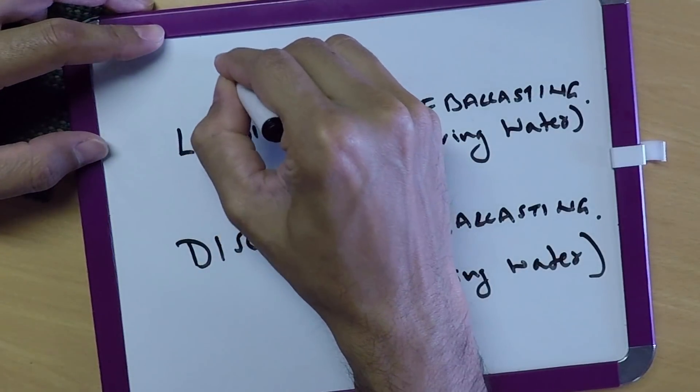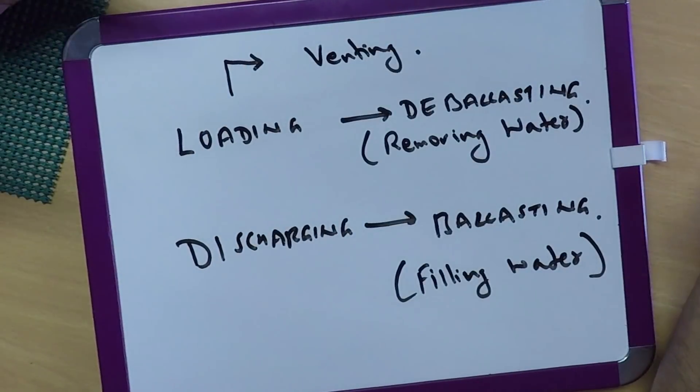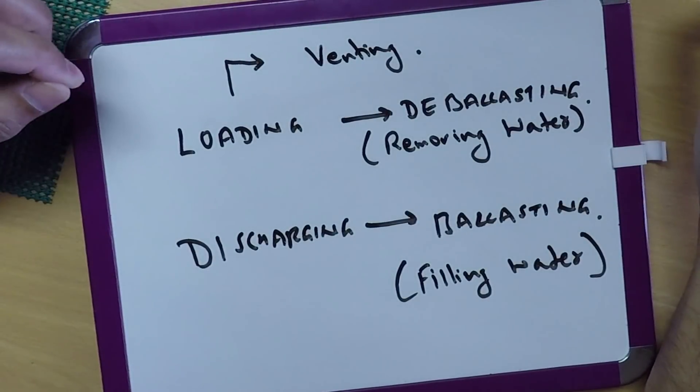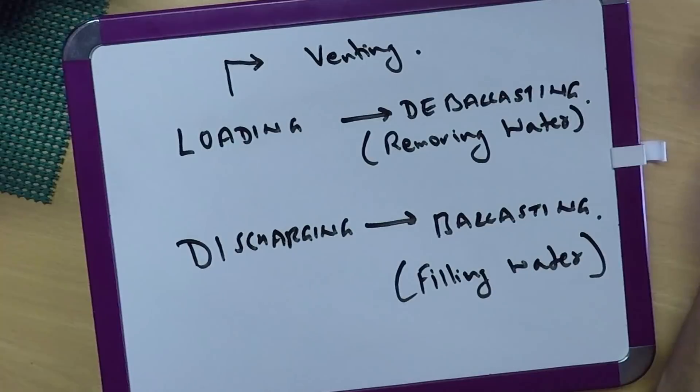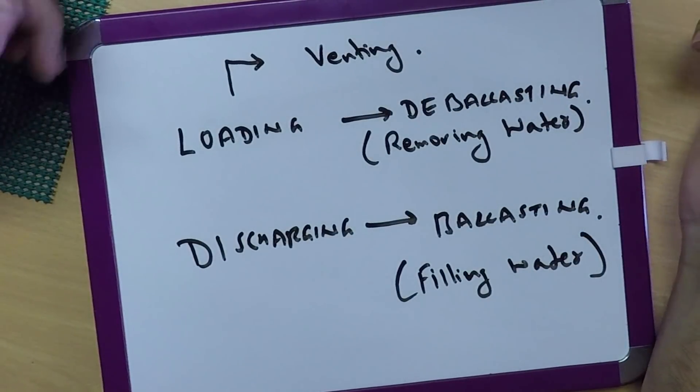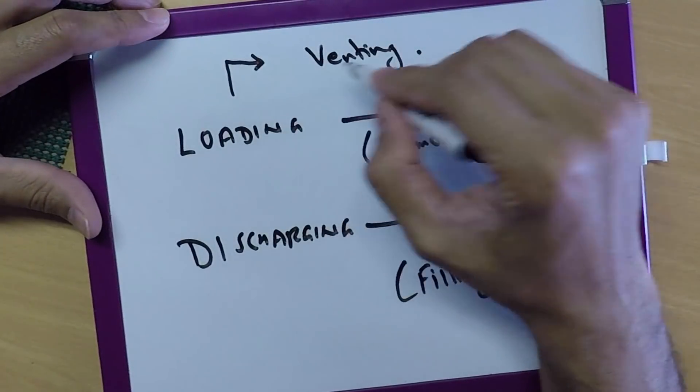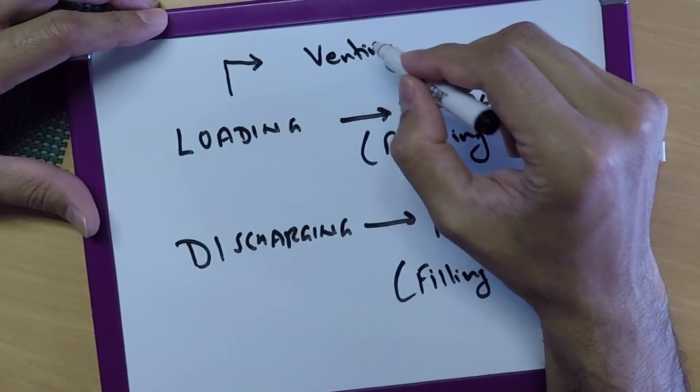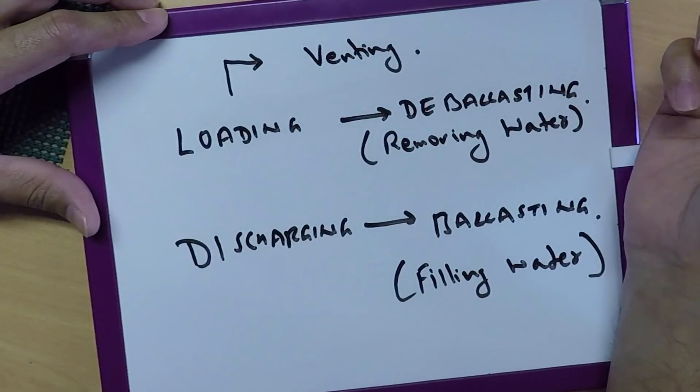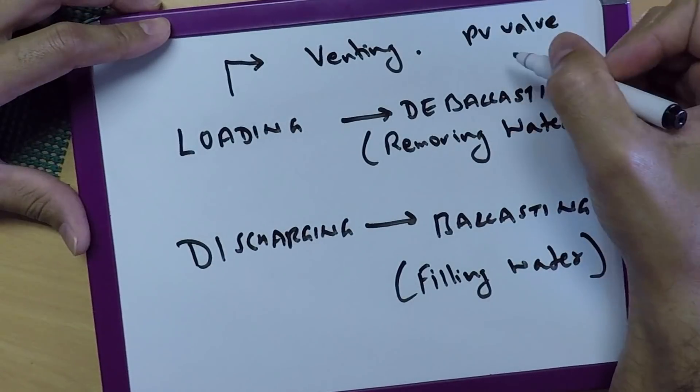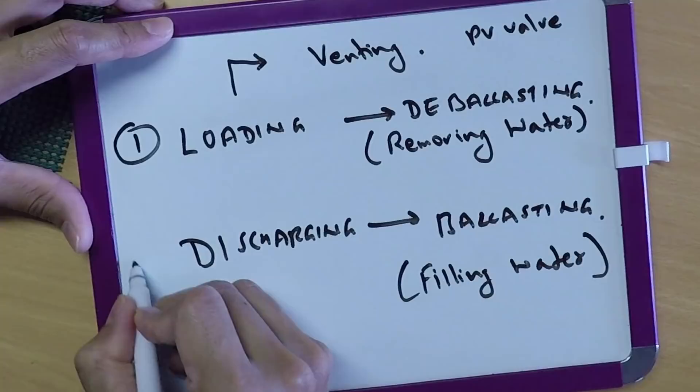When we are loading we are also venting. If you guys can imagine, there is a tank and we are filling cargo. Then the atmosphere inside the tank needs to come out in order to give place to the cargo. So at the same time we have to do de-ballasting as well as venting. And now this venting is done by using our PV valves. These are the valves which open at a set pressure automatically.